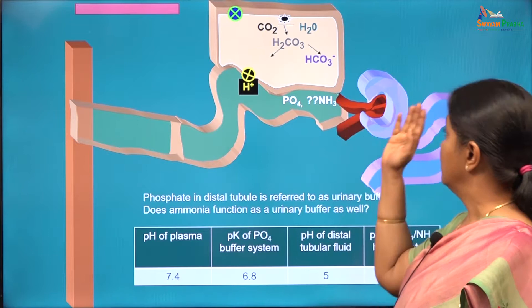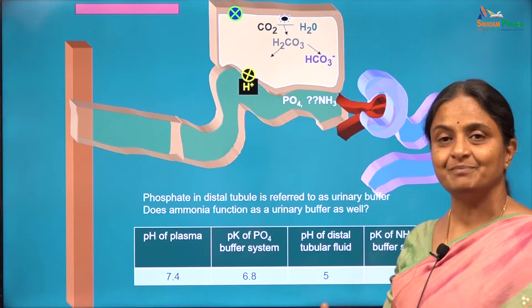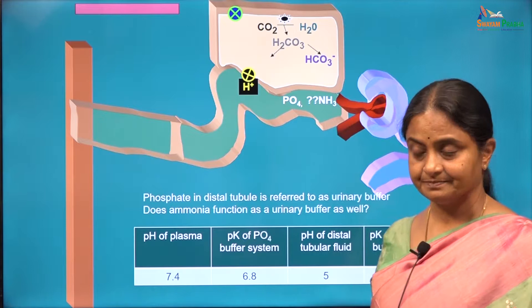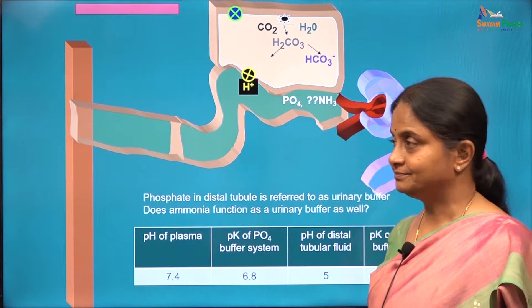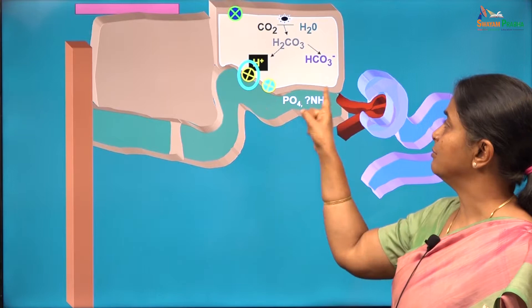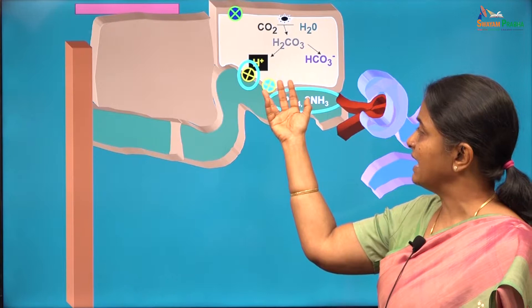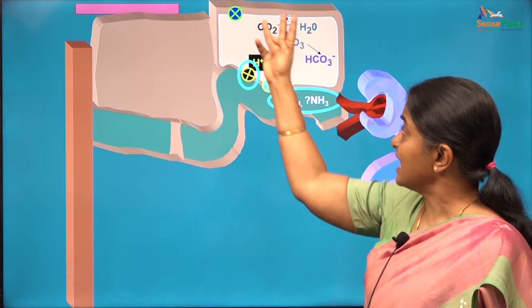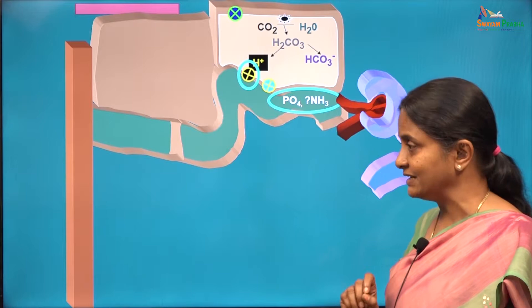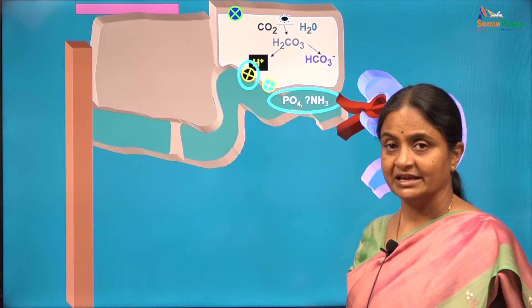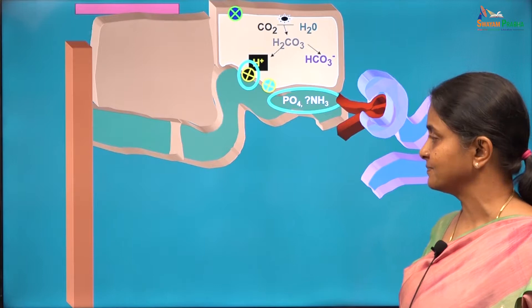However, ammonia generation in the proximal tubule may help preserve plasma bicarbonate in another way — we will consider that later if possible. In summary, we have the proton pumps in the luminal border of the distal tubular cell which extrude protons, and we have the urinary buffers accepting those protons. These two systems help eliminate protons formed in the cell and therefore the reaction can go on and enough bicarbonate can be formed in the distal tubular cell.